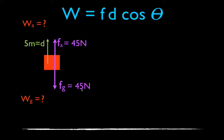The work formula is Fd cosine theta. The force in each case is the same, the distance is the same, and it's really cosine of theta that matters. Theta is the angle between the displacement and the force, and that's what determines whether the work is negative or positive.